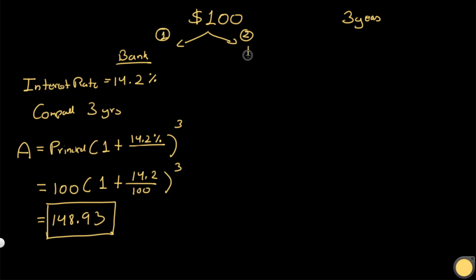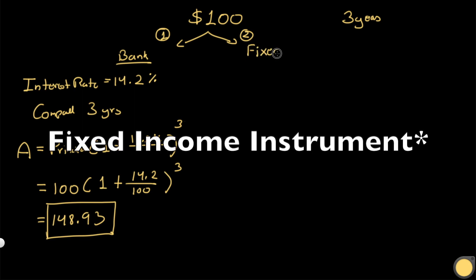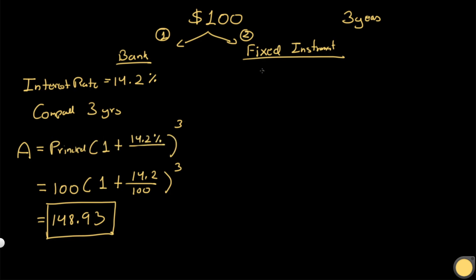Option two allows you to keep the hundred dollars in some sort of fixed instrument — it could be a bond, a loan to someone, whatever it is. At year zero you give the hundred dollars. At year one you get twenty dollars back. At year two you get another twenty dollars. And at year three you get the principal amount of a hundred dollars back.